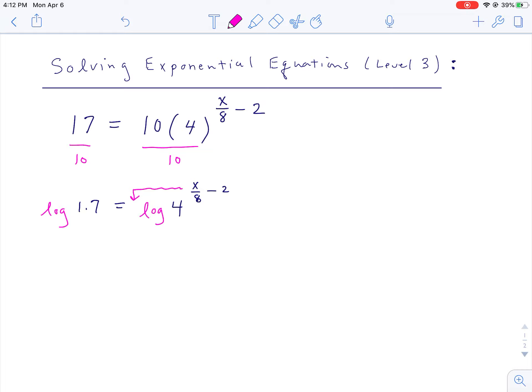And of course the whole point of that is that exponents come down and become coefficients. So on the left you have log of 1.7, on the right you have x over 8 minus 2 times the log of 4. And you really have to be careful, that x over 8 minus 2, that's all grouped together. It was the exponent, now it's all grouped together as a coefficient for log 4.